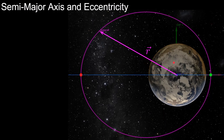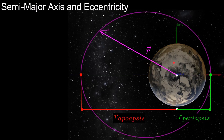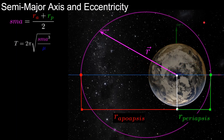Using just these two scalar values, apoapsis and periapsis, we can calculate our semi-major axis and eccentricity. The semi-major axis is simply the average of the apoapsis and the periapsis, which geometrically corresponds to half of the aps line. Semi-major axis is the only element needed to calculate orbital period, so no matter how orbits look, if two of them have the same semi-major axis, they have the same orbital period.